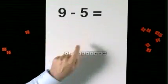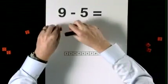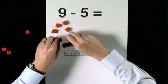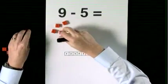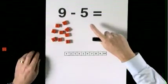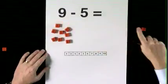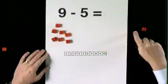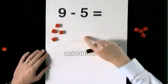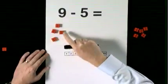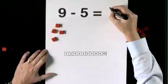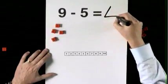9, take 5. 1, 2, 3, 4, 5, 6, 7, 8, 9. Take 5 — take 1, take 2, take 3, take 4, take 5. That leaves 1, 2, 3, 4. 9, take 5, equals 4.